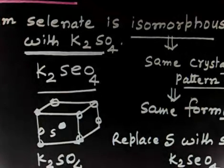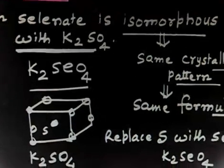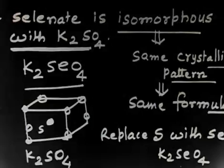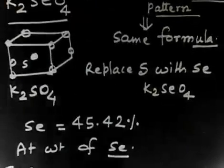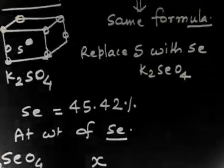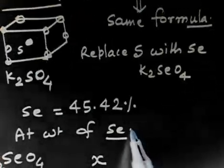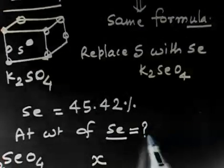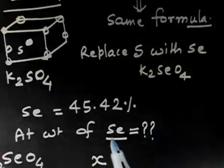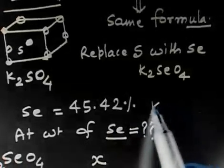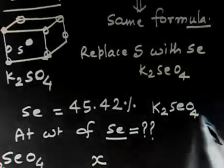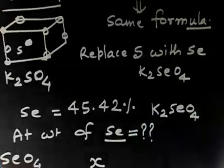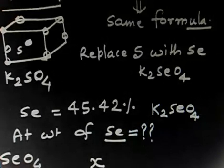The question states that in potassium selenate K2SeO4, selenium is 45.42% by mass. We need to find the atomic weight of selenium.